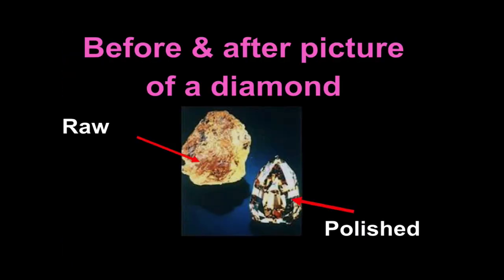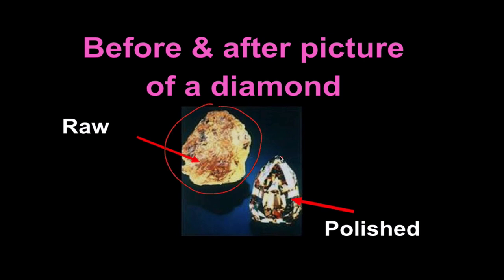This is looking at a diamond as it would be found in an actual mine — notice it looks nothing like a cut gem. The process of going from a raw diamond to a finished gem is extremely labor intensive and it takes skilled craftsmen. We've been doing this for years and years to be able to cut and polish diamonds to get them to look like this.